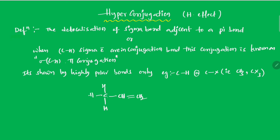In this CH sigma bond, this carbon undergoes SP2 hybridization and this carbon undergoes SP3 hybridization. SP2 carbon attached with SP3 carbon — that SP3 carbon is called alpha carbon. Carbon which is attached to SP2 carbon is called alpha carbon. Alpha carbon attached with hydrogens are called alpha hydrogens.